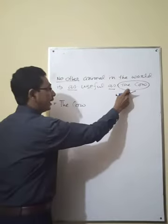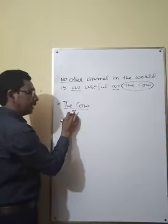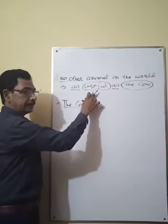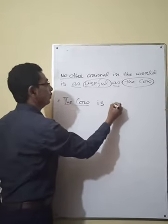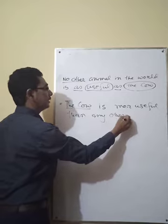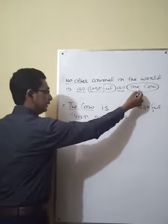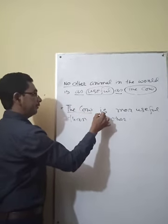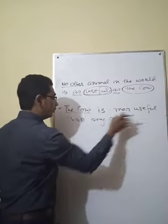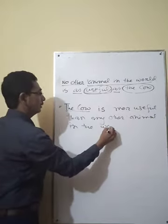In the sentence, 'the cow' is the object, and when you write it down here, this object becomes the subject. The cow is — then you write the comparative form of the adjective: 'The cow is more useful than any other.' I discussed that if you find 'no other,' when changing positive to comparative, you add 'than any other.' So the full sentence becomes: 'The cow is more useful than any other animal in the world.'